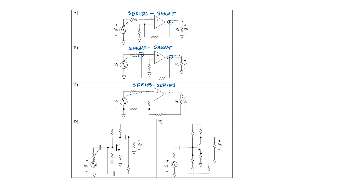In circuit D, I cross the feedback path on both the input and output side of the amplifier — this is therefore shunt-shunt feedback. Circuit E is a little bit tricky, but this connection is the same as if the connection had been up here; they're all connected by a wire. This is also shunt at the input side. And at the output side, I can walk all the way to the transistor without crossing the feedback path — therefore, this is series at the output.